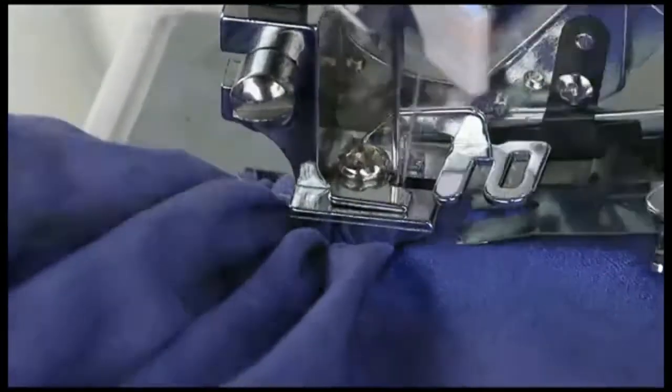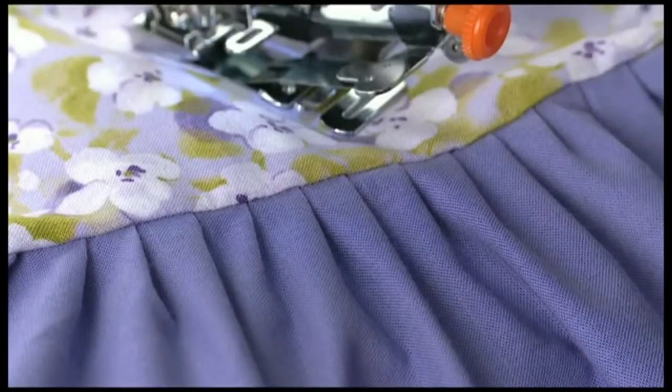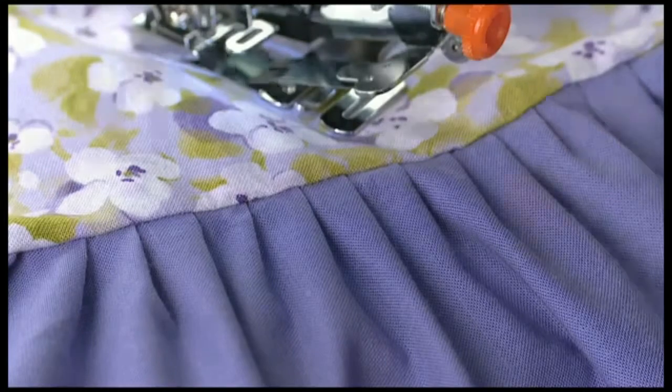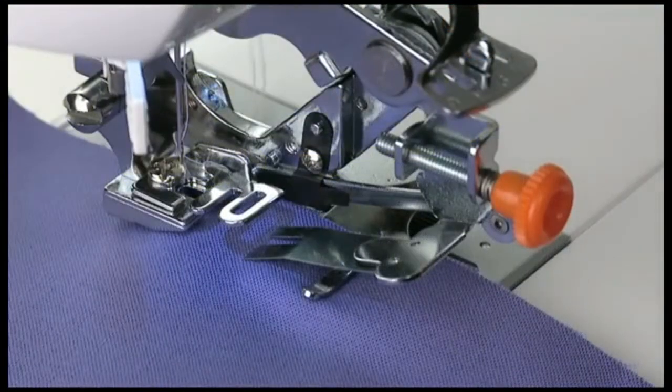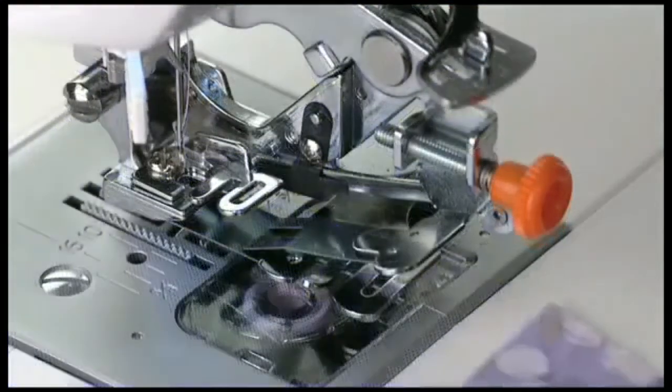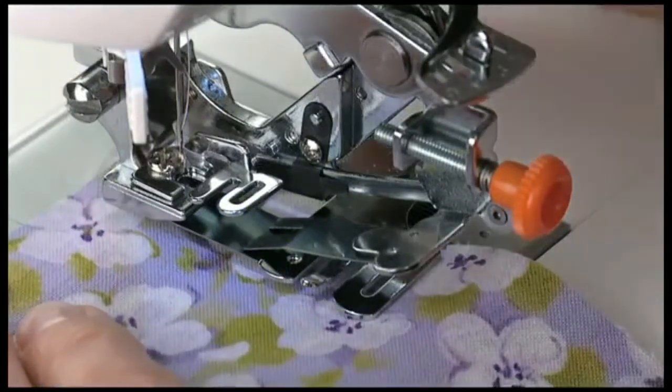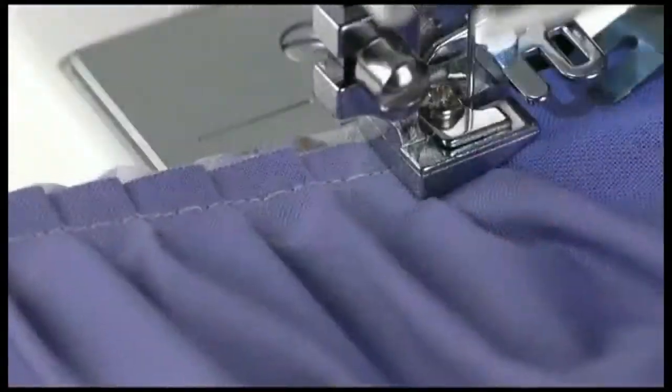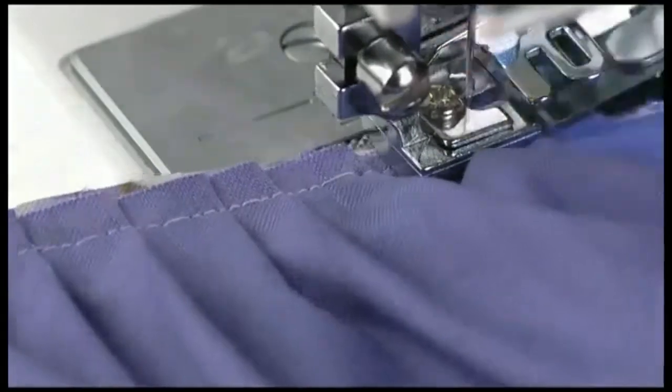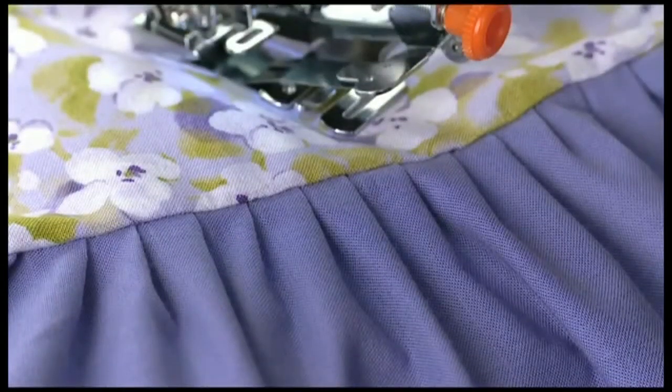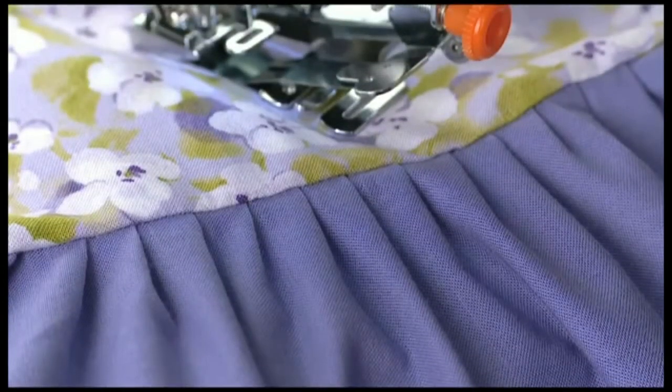To attach a ruffle to a flat fabric simultaneously, place the fabric to be ruffled into the attachment as usual, but then place the fabric that is to remain flat underneath the separator blade. When you are finished sewing, the ruffle will be stitched to the edge of the flat fabric.